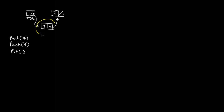If we call a pop function, we delete the node at the beginning and return the data present in that beginning node. These are the two functions we need to design for implementing stacks using a linked list.